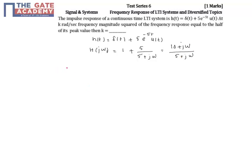Now, the condition given is that |H(jω)|² is equal to half of the maximum of |H(jω)|², and this condition holds at ω equal to k.